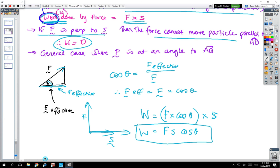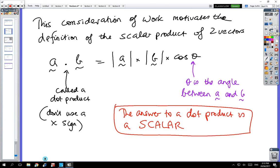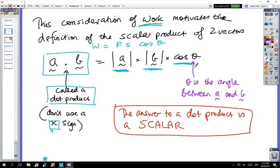The consideration of work done previously motivates a definition of a scalar product. If I've got the product, it's called a dot product, not a multiplication product. We don't use a multiplied sign. We had work equals FS cos θ. This generates a formula for the general case of two vectors: it's the size of a times the size of b multiplied by the angle between a and b.